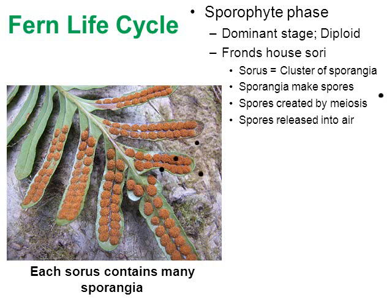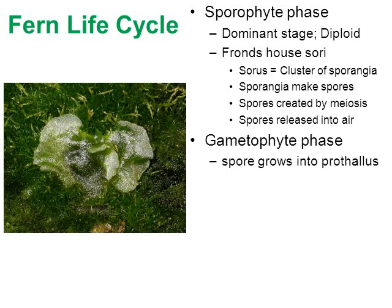Eventually the spores will land on the ground and grow into the next stage in the life of a fern — the haploid stage called the gametophyte. Once a spore lands on the ground, it grows into the haploid stage known as the gametophyte. In ferns, the gametophyte stage is called the prothallus — a heart-shaped leafy structure no bigger than your fingernail. The prothallus is fairly small and easy to miss because it's only about the size of a fingernail.